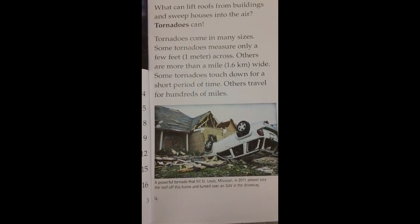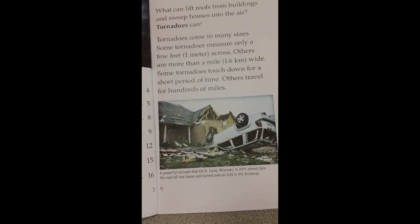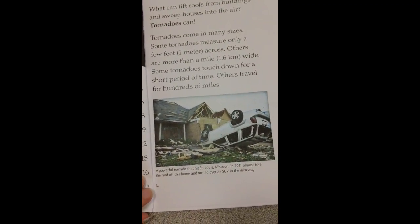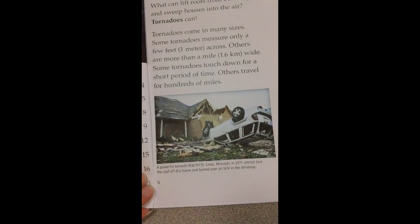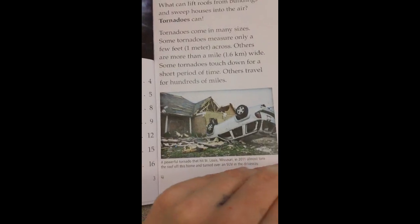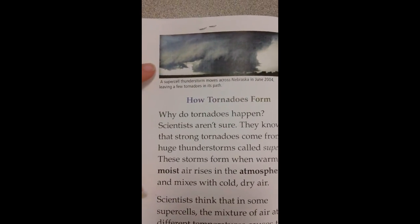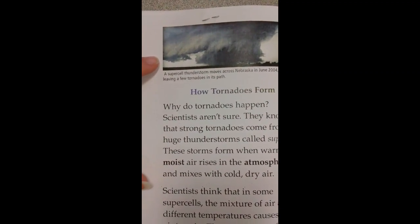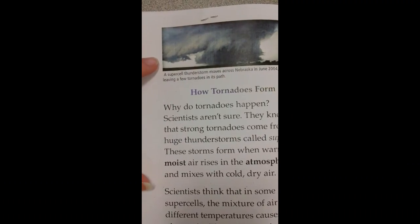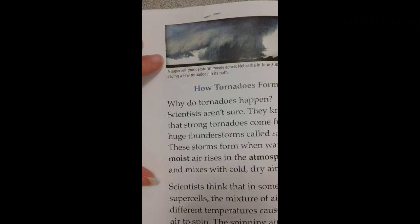A powerful tornado that hit St. Louis, Missouri in 2011 almost tore the roof off a home and turned over an SUV in the driveway. A supercell thunderstorm moves across Nebraska in June 2004, leaving a few tornadoes in its path.